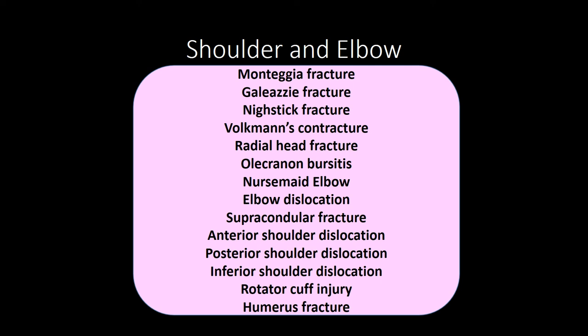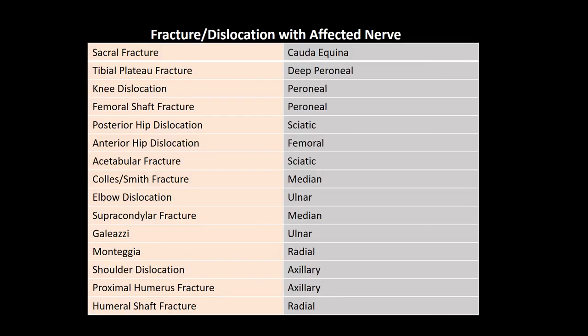For humerus fractures, proximal fractures affect the axillary nerve while mid-shaft fractures affect the radial nerve. Thoracic outlet syndrome is compression of the brachial plexus, subclavian artery, or subclavian vein when the thoracic outlet is narrowed; symptoms and treatment depend on which structure is affected. Finally, here's a chart review of various fractures and their most commonly affected nerves. This was a lot of material — orthopedics is a tough subject. If you have any questions, please reach out, and good luck on your shelf and the rest of your examinations.